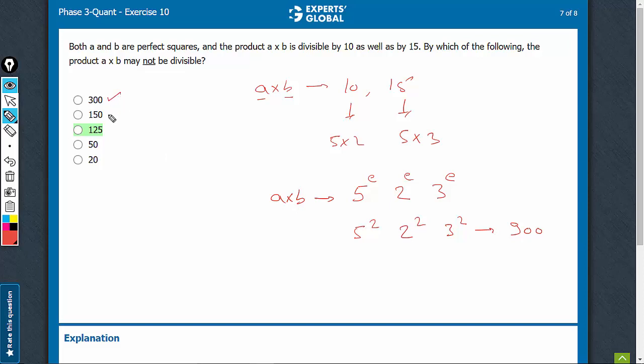300 has to be a factor of A into B. 150 has to be a factor of A into B. 50, 20—they all have to be factors of A into B because the minimum value is 900.